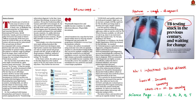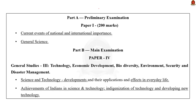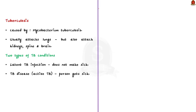In this context, let us understand tuberculosis disease and the methods of its diagnosis. Tuberculosis is an infectious disease caused by a bacterium called Mycobacterium tuberculosis. It usually attacks the lungs, but can also affect the kidney, spine and brain. Not everyone infected with TB bacteria becomes sick. There are two types of TB conditions: latent TB infection, where germs live in the body but do not make the person sick, and TB disease, which is active TB where the person gets sick.